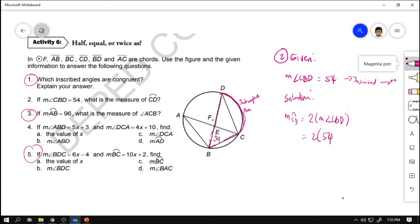So solution, kung ito ay 54, ilan si arc CD? The measurement of arc CD is equal to twice the measurement of angle CBD. Bakit twice, kasi siya is inscribed. This is an inscribed angle and this is its intercepted arc. Next, with that, 2 times 54, we have 108. Therefore, the degree measure of arc CD is 108. Tapos na yung number 2. Pakisagot si number 3.